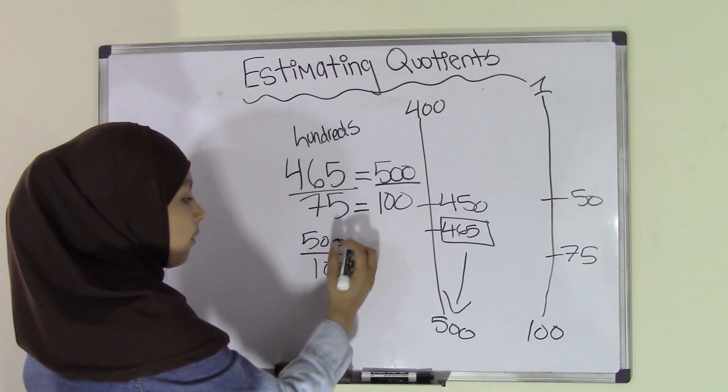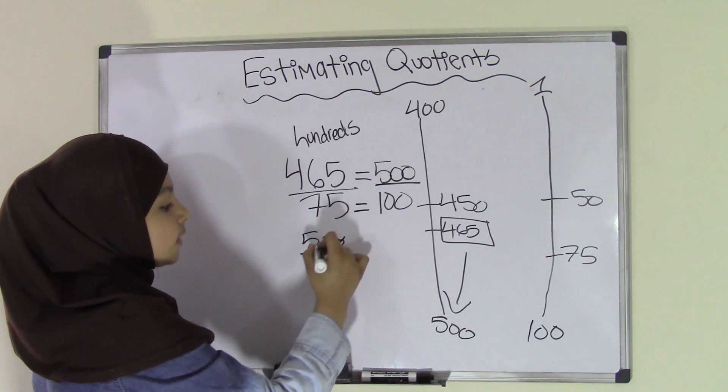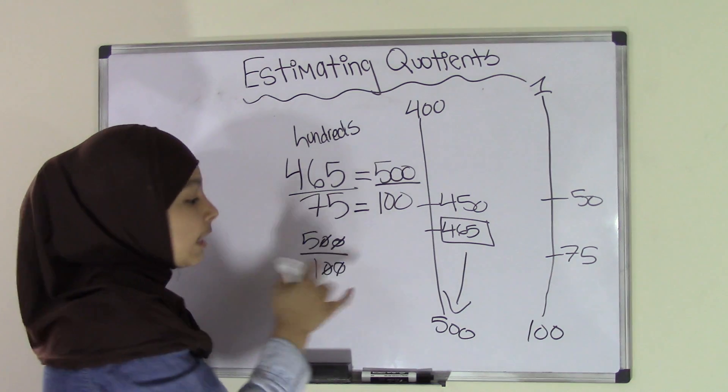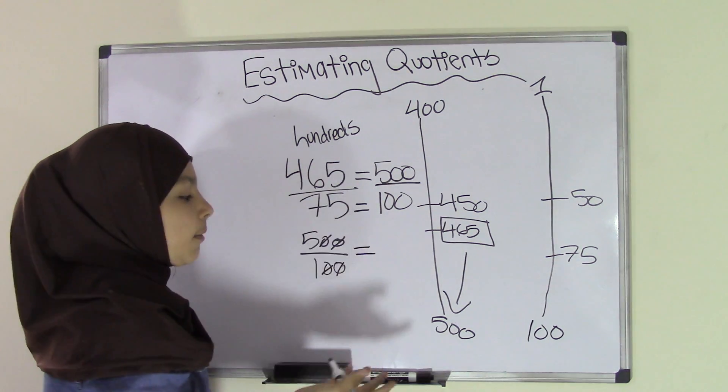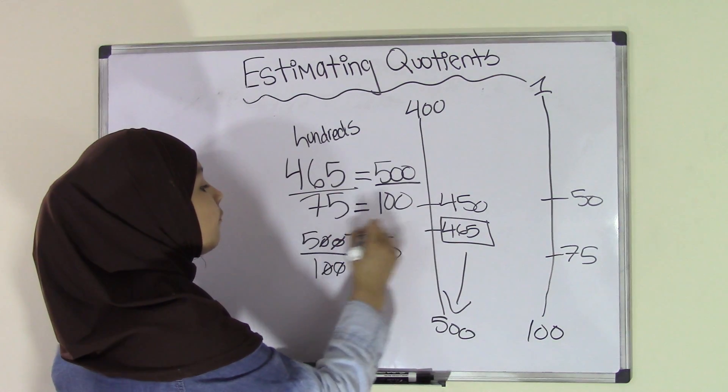So now we're left with 5 divided by 1. And we know that any number divided by 1 would equal the same number. That means our quotient would equal 5.